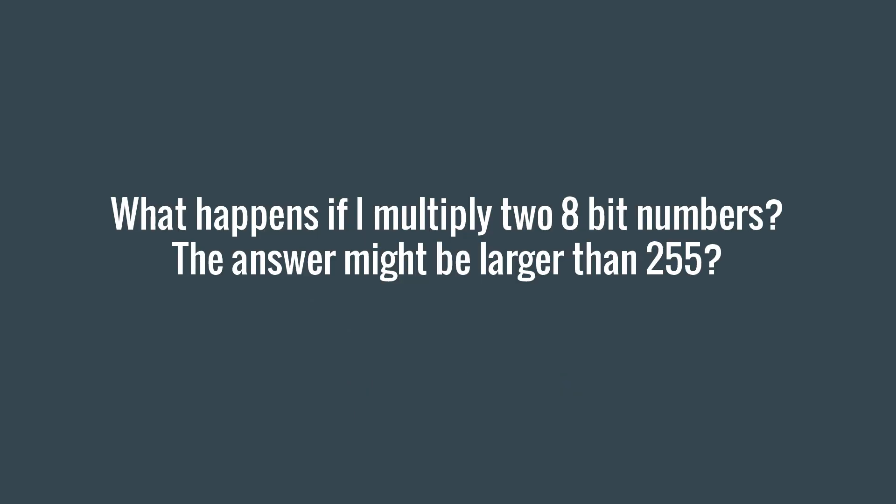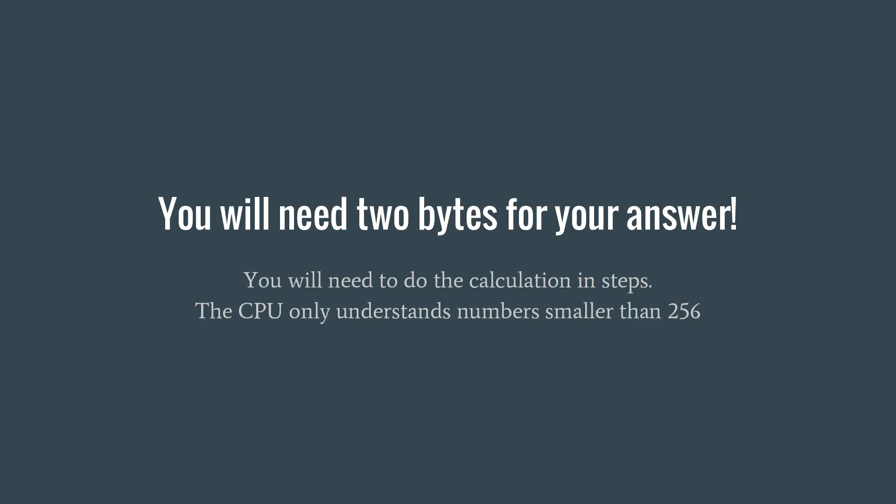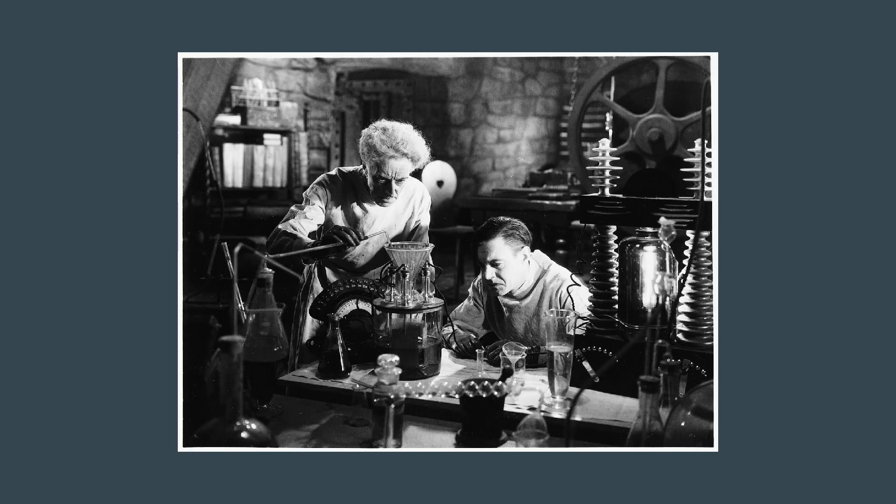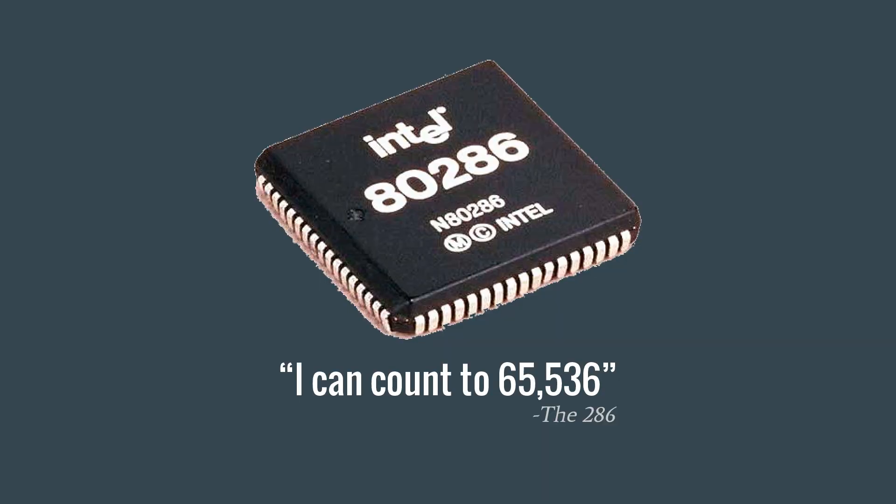Working with one byte at a time can be inefficient when dealing with calculations on larger numbers. Since 8 bits can only represent the numbers 0 through 255, if you want to work on numbers bigger than that, you need to use multiple bytes and split the calculation into smaller parts. This takes time, and there are many cases when you need to calculate something with numbers bigger than 255. So companies began developing CPUs that worked on two bytes at a time — 16 bits. More bits per command also made it easier to address larger amounts of memory by storing longer addresses, though 8-bit CPUs could address more memory than just 256 bytes, so that's not the core of where the bit naming system comes from.